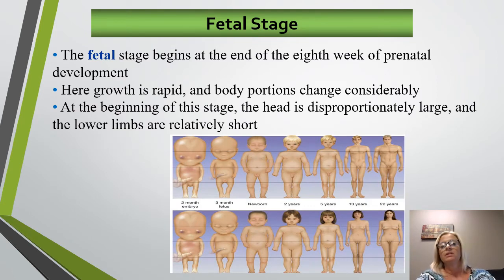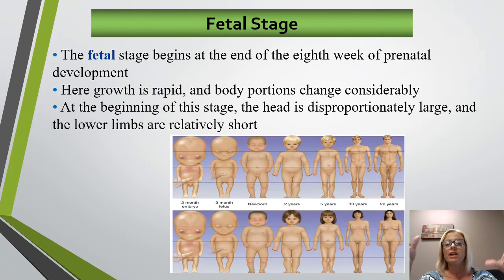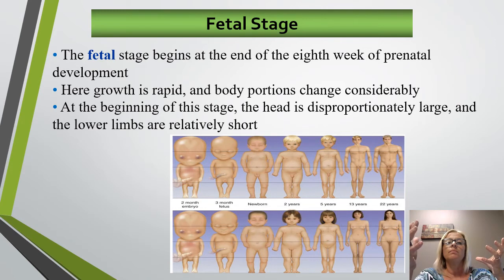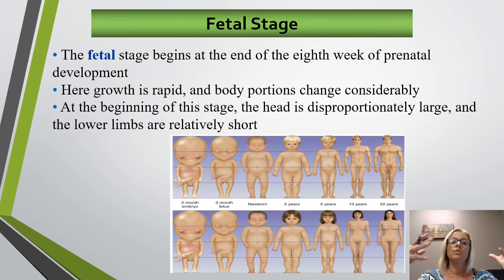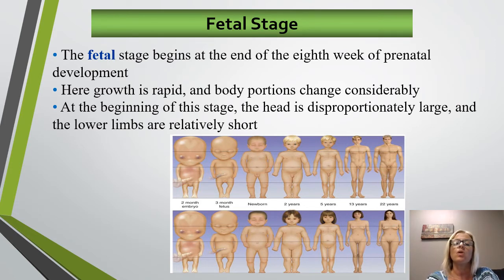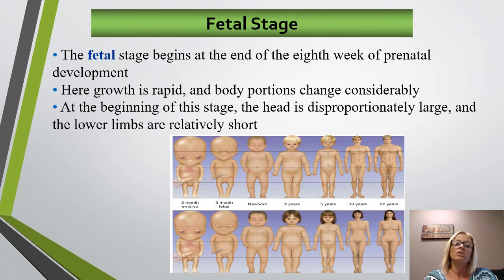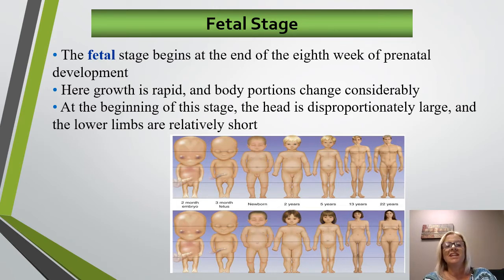The fetal stage begins eight weeks after fertilization. Growth is very quick and rapid, and body proportions change a lot. The head is very large, the lower limbs are short, and they gradually change to resemble those of a child. The organ systems are mostly formed, although they can be immature. This is why if a baby is born prematurely, things like the lungs have not had enough time to develop. The head is disproportionately large compared to the rest of the body at the beginning of this stage.